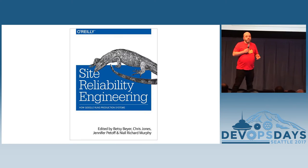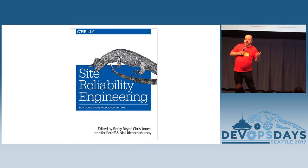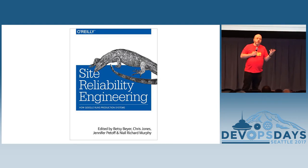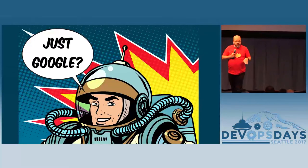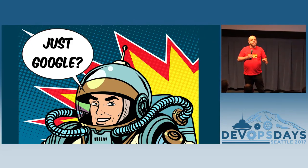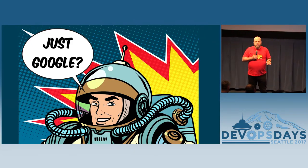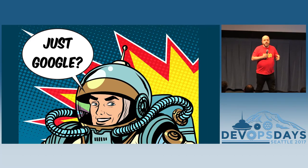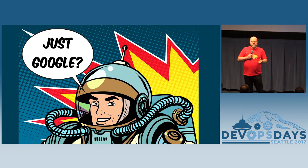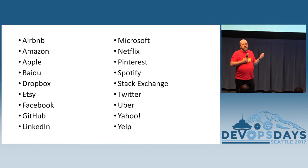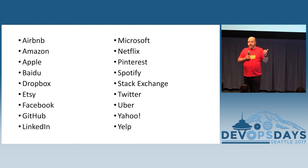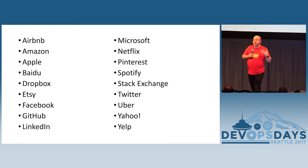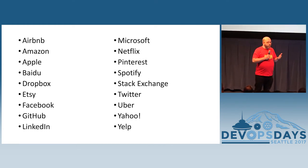This is a book recently published by the Google folks describing the Google method of how site reliability works. And people tend to ask: are we just talking about Google? Are they the only people who think reliability is a key core thing and have SREs? The answer is no. There are a ton of other companies — here's a list of some of them. And if I can embarrass him, the actual SRE lead from LinkedIn is in the audience.